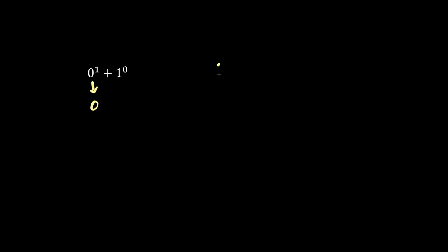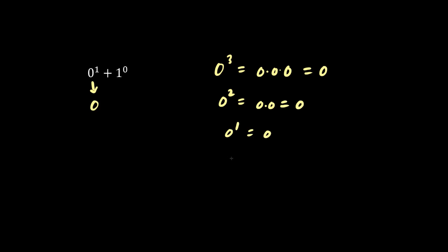What is 0 to the 1 plus 1 to the 0? 0 to anything is just 0. 0 cubed equals 0 times 0 times 0, which is 0. 0 squared is 0 times 0, which is 0, and 0 to the 1 is also 0.